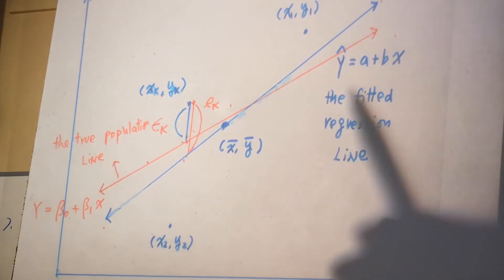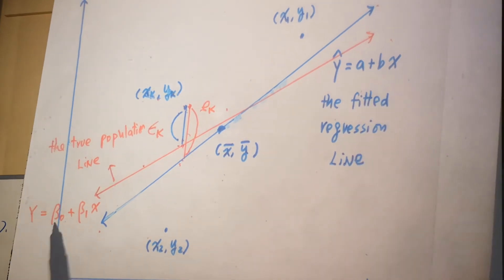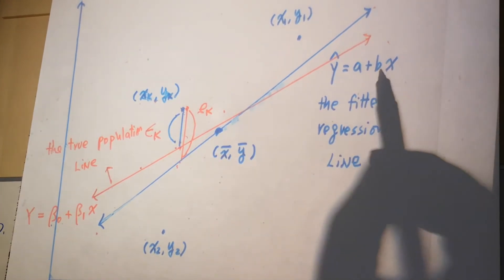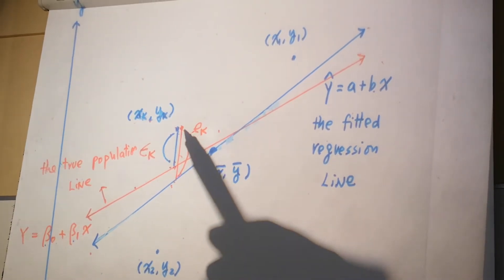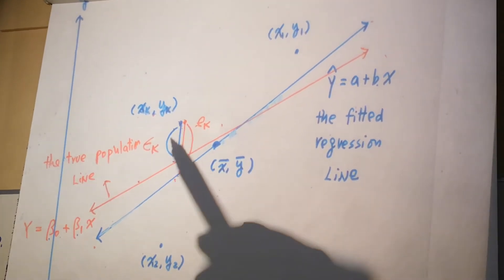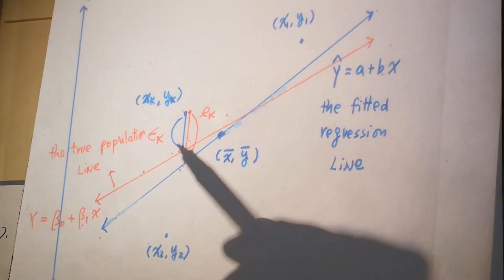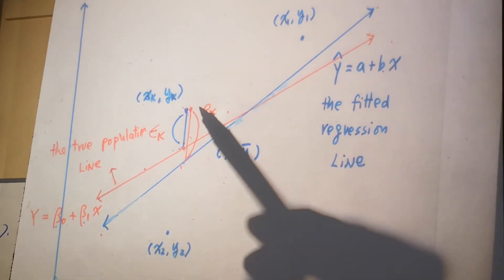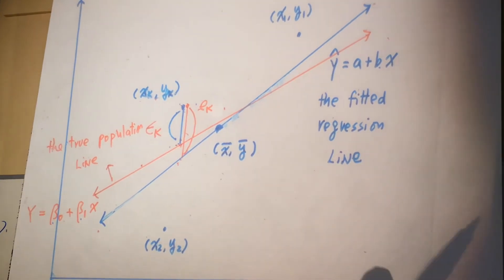If I use A to predict β₀ and B to estimate β₁, I want to predict σₖ. What can I use to estimate σₖ? A very natural choice is eₖ.